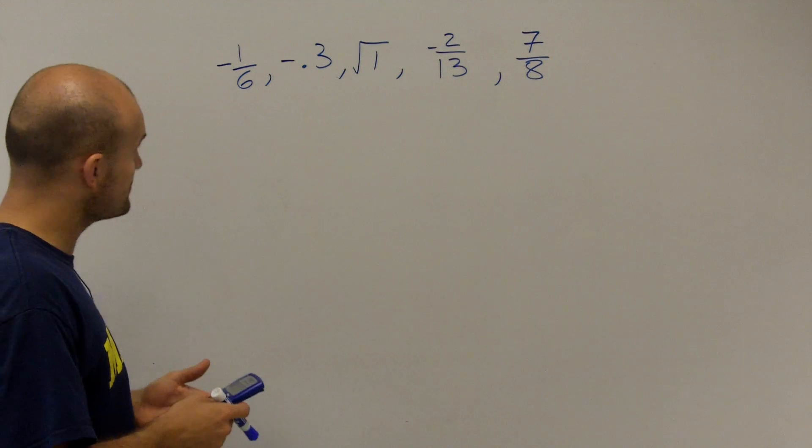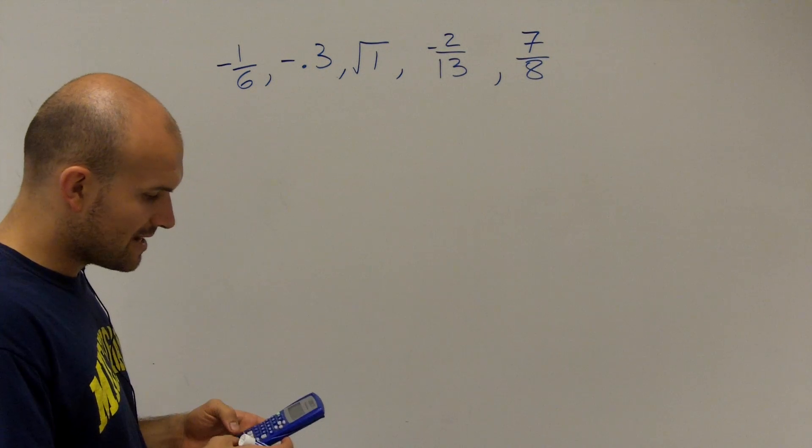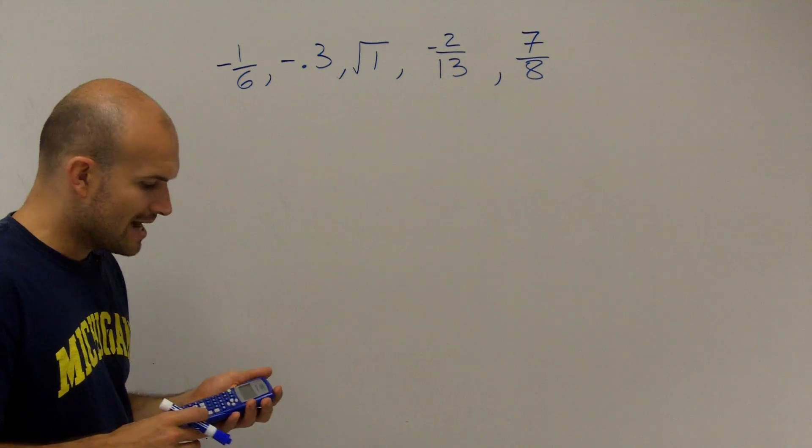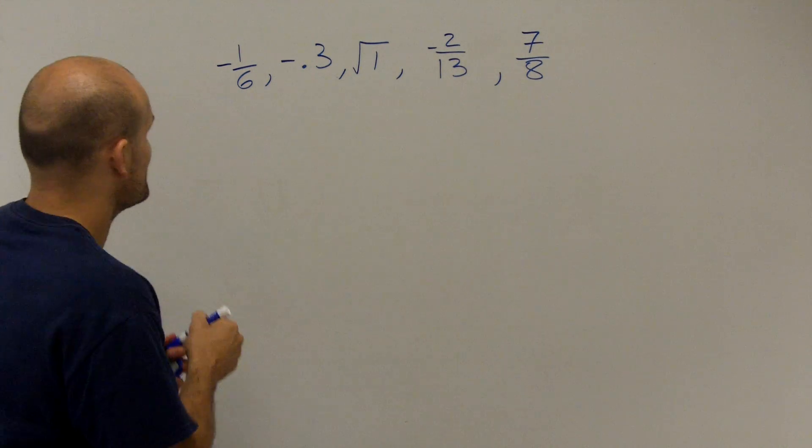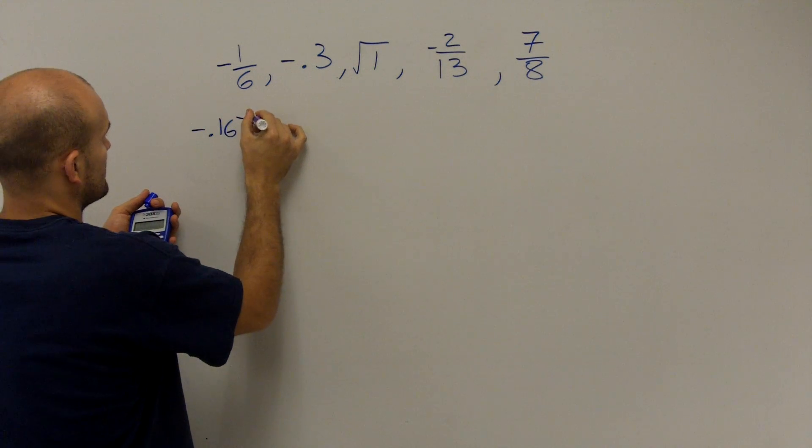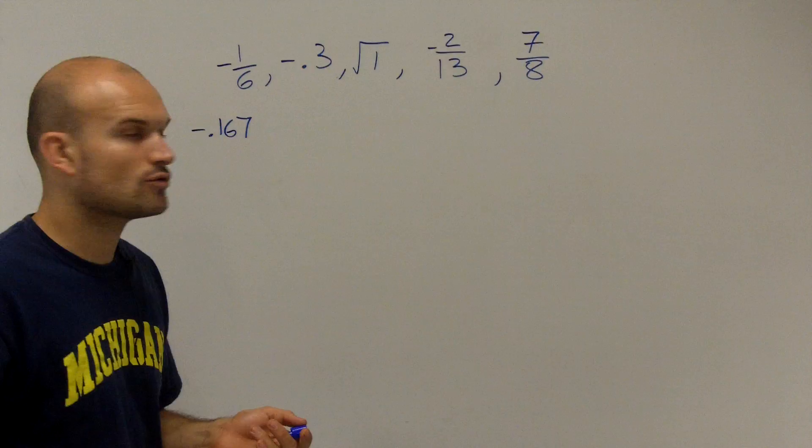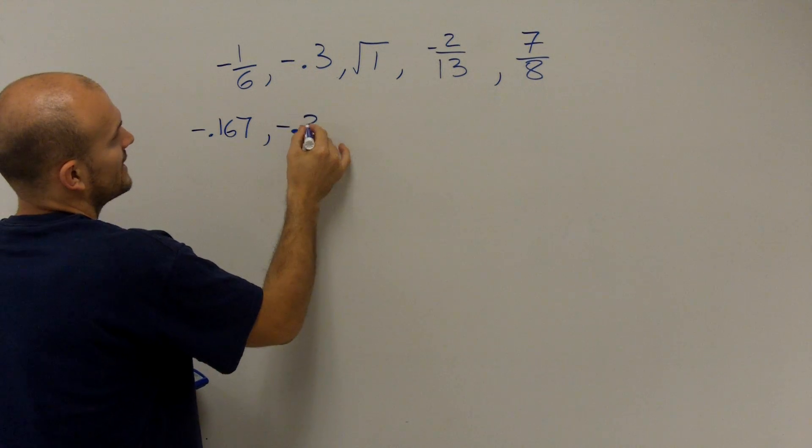But I'm just going to round my decimals here. So if I have negative 1 divided by 6, we can see rounds to negative 0.16 repeating. So I'm just going to rewrite that as negative 0.167, as I'm just going to round it up. Then, negative 0.3 is already a decimal.